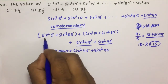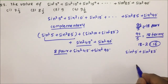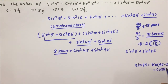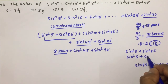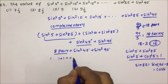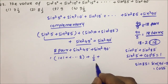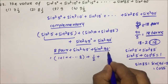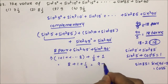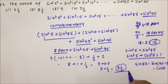Each complementary pair gives: sin² 5° + sin² 85° = sin² 5° + cos² 5° = 1. So 8 pairs give 8. Plus sin² 45° = (1/√2)² = 1/2. Plus sin² 90° = 1² = 1. So the total is 8 + 1/2 + 1 = 9 and a half.